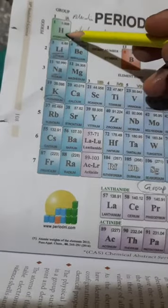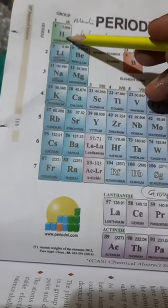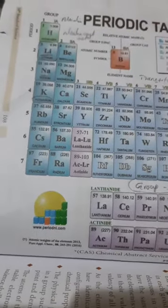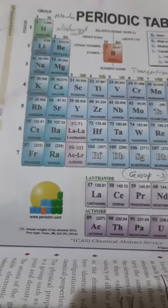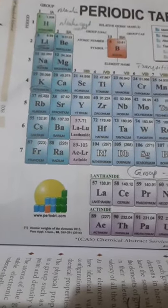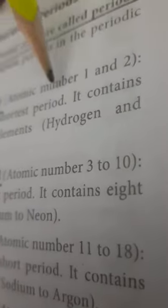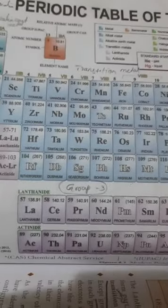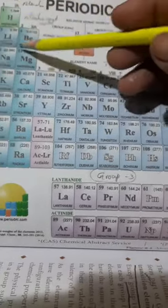The 1st period contains hydrogen and helium — 2 elements with atomic numbers 1 and 2. This is the shortest period. It contains only 2 elements: hydrogen and helium.